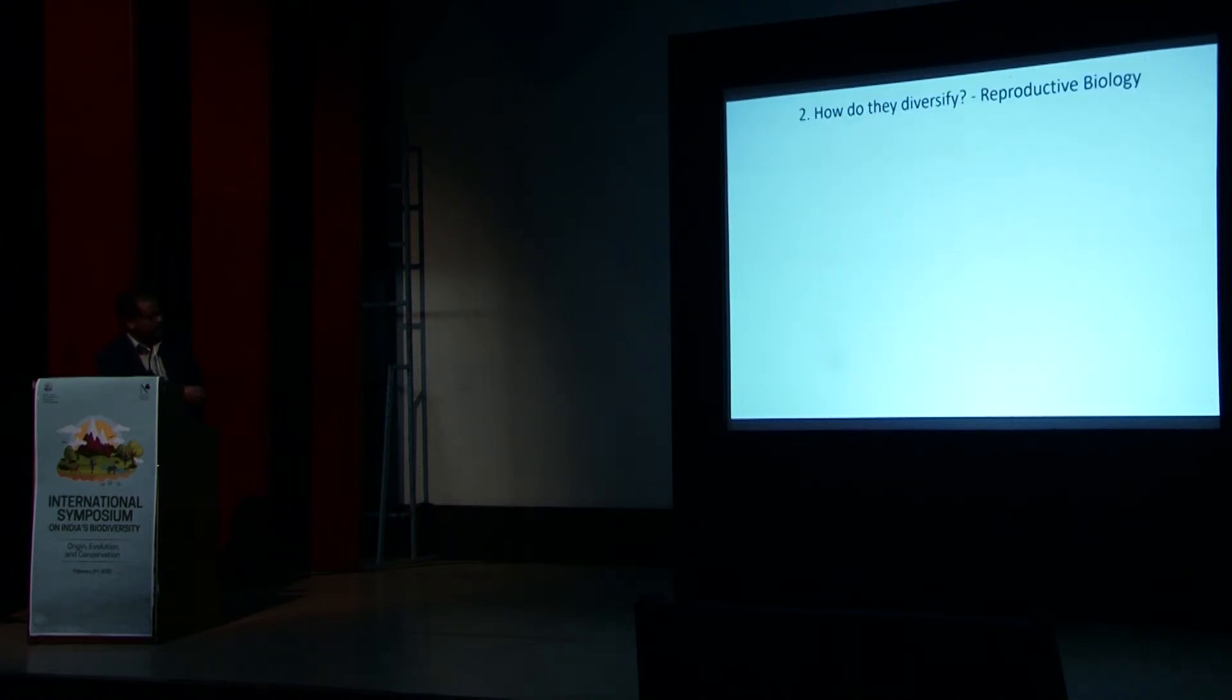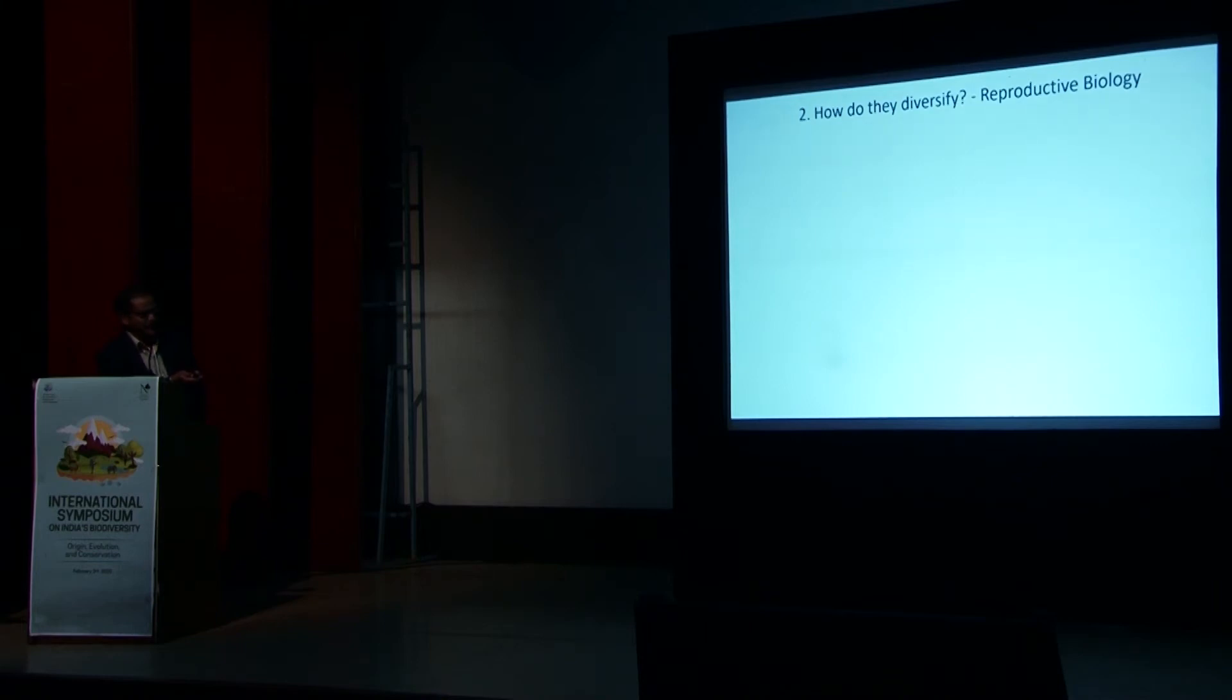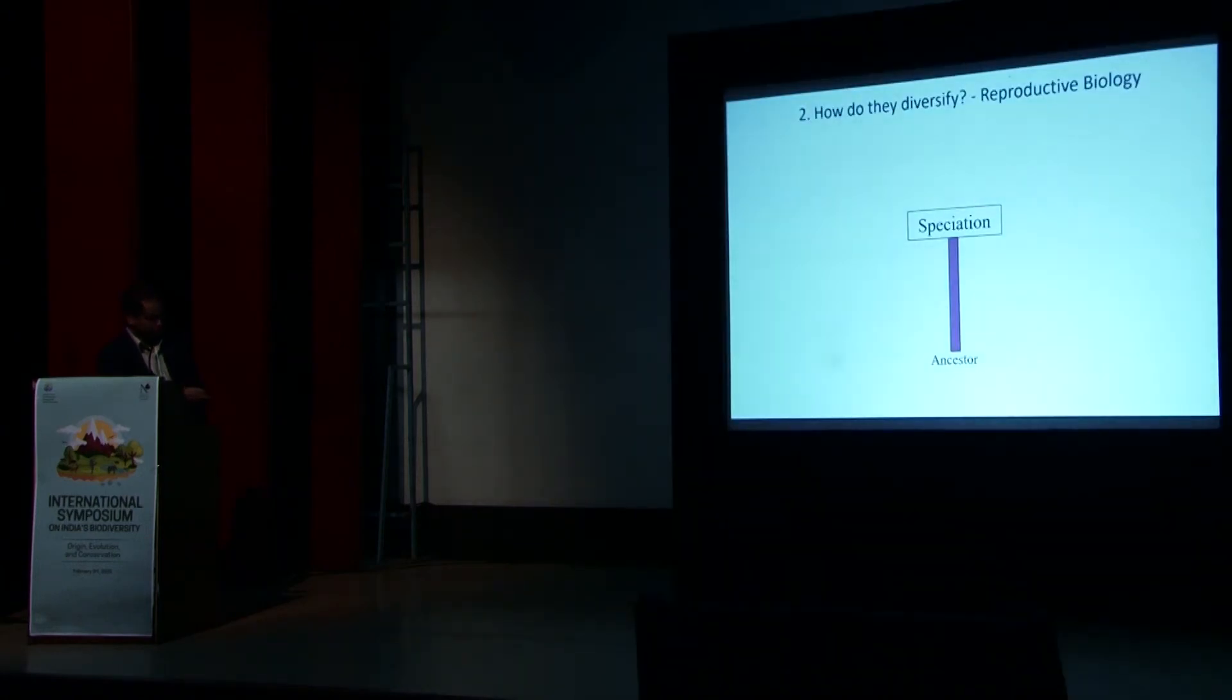And also there's one clade, the section Doona, this is one of the group of dipterocarps in Sri Lanka. I will get back to this later on, in another topic later on. So, from the ancestor, there would have been, at some point they may have speciated, and then forming into species A and B. So this point is where the reproductive biology that we are going to be looking into how they contribute to the speciation.